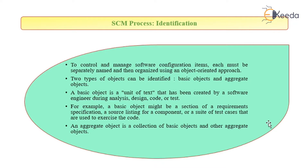Software Process Identification: to control and manage software configuration items, each must be separately named and then organized using an object-oriented approach. Two types of objects can be identified: the basic object and aggregate objects. A basic object is a unit of text created by the software engineer during the software development lifecycle — for example, a section of requirement specification, a source listing for a component, or a suite of test cases used to exercise the code. An aggregate object is a collection of such basic objects.